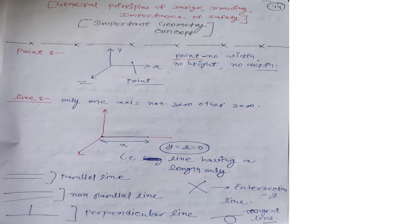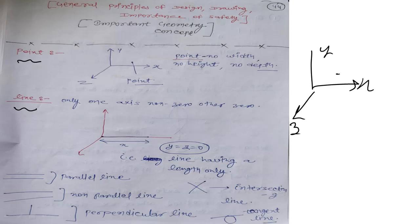First topic we will discuss: what do you mean by point, and what is a line? So point means, on the space — for example, X, Y and Z plane. A point has no width, no height and no depth. Means width is equal to 0, height is equal to 0, depth equal to 0.